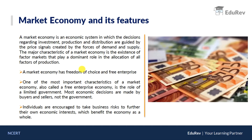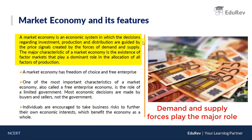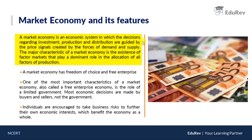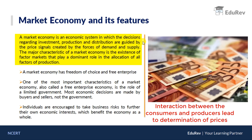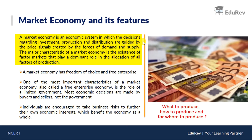Now we'll talk about the market economy and its features. A market economy is an economic system in which the decisions regarding investment, production, and distribution are guided by the price signals created by the forces of demand and supply. In a market economy, demand and supply have a free role to play. Consumers and producers interact with each other, prices get determined, and through price signals all the economic questions — what to produce, how to produce, and how to allocate — get resolved.